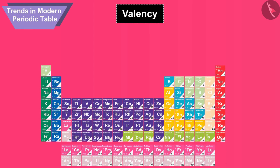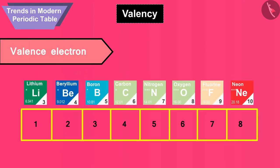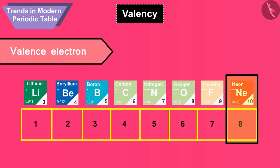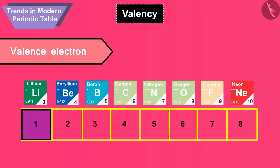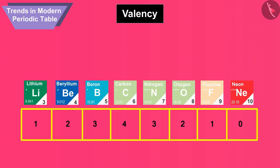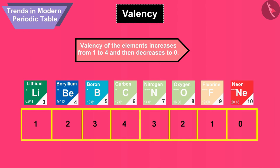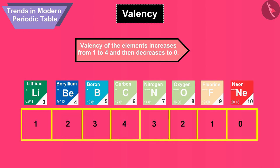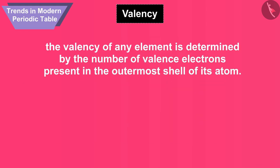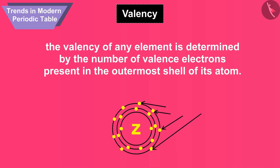On moving from left to right in a period, the number of valence electrons in elements increases from 1 to 8, and therefore their valencies can be found by the number of these valence electrons. On moving from left to right in each short period, the valency of the elements increases from 1 to 4 and then decreases to 0. The valency of any element is determined by the number of valence electrons present in the outermost shell of its atom.